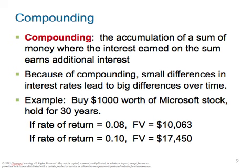Compounding is the accumulation of a sum of money where the interest earned on the sum earns additional interest. Say you've invested $30,000 and get a 10% one-year return. You're keeping that $30,000 invested, but the next year it's $33,000 plus interest, then perhaps $36,000, and you keep doing that from year to year — that's called compounding. Your base sum keeps going up because of interest. Each year it adds something, then you put interest on top of that, and it keeps building.